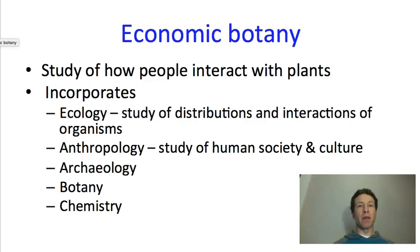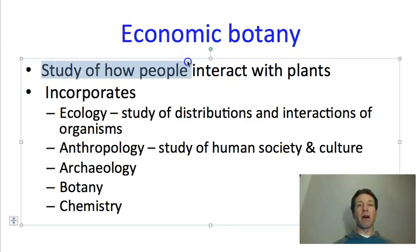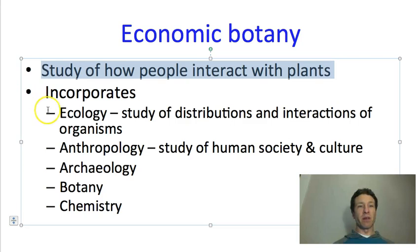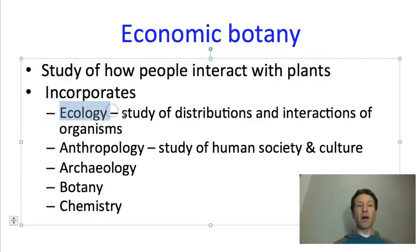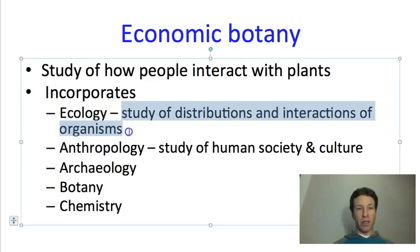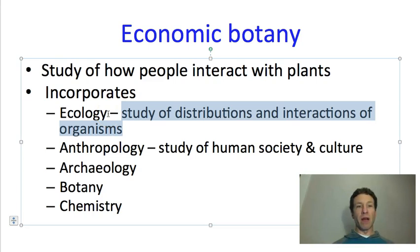Starting with economic botany, let's define this term. Economic botany is the study of how people interact with plants. This is going to incorporate several different fields. First, it includes ecology. We can define ecology generally as the study of the distribution and interactions of organisms with other organisms and with their environment. Part of understanding how people interact with plants is understanding where the plants are and where people find them.